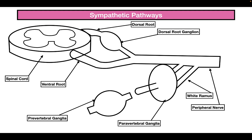Now let's take a look at the autonomic nervous system, starting with the sympathetic nervous system. The pre-ganglionic sympathetic neuron cell bodies are all going to be found in the lateral horn. For the first pathway, these pre-ganglionic neurons send their axons through the ventral root, through the peripheral nerve, through the white ramus, and then into the paravertebral ganglion.